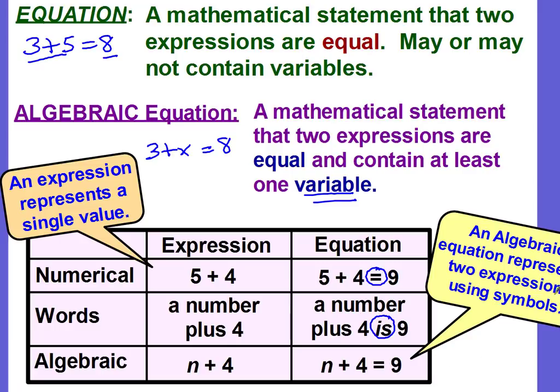An algebraic expression would be n plus 4 equals 9. So it's telling you what it equals. An algebraic equation represents two expressions that use symbols, numbers, and operations. The main difference is that an equation has the equal sign. And if you look at the word equation, it actually looks like the word equal, doesn't it? Except it's missing the L.